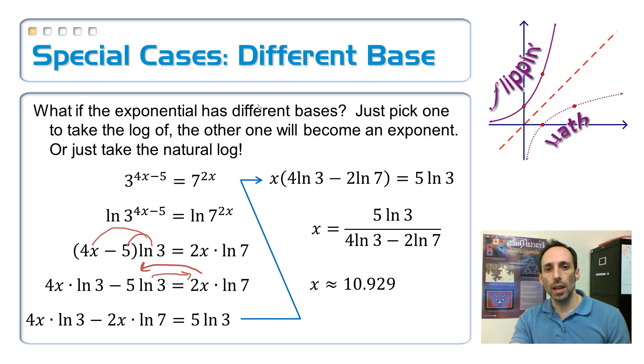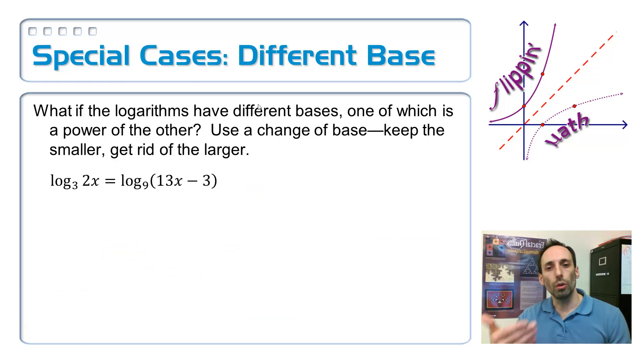So, one last case, one last special case, and that's when the bases are different, but it's a logarithmic equation. So, what if the logarithms have different bases, but there's one extra condition, and one of them, one of the bases is a power of the other one. In that case, we can solve it by just taking a change of base formula, taking the change of base formula and applying it to the larger, applying it to the larger base to turn it into the smaller one. Keep the smaller one, turn the bigger one into the smaller one, let's take a look.